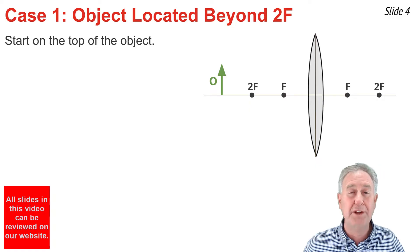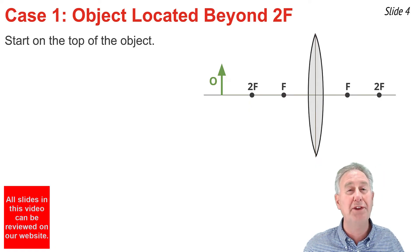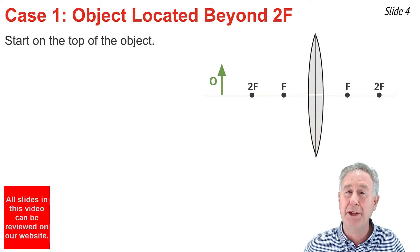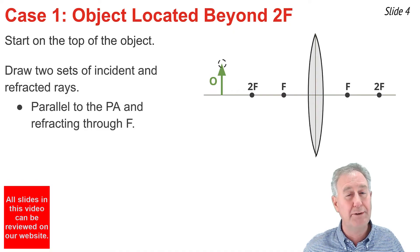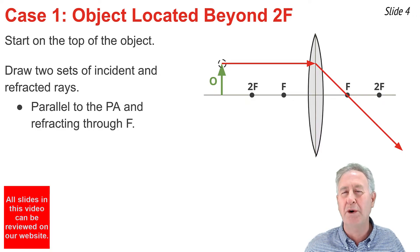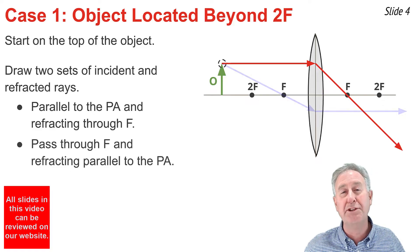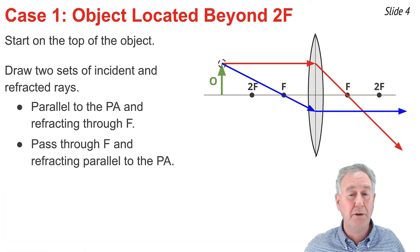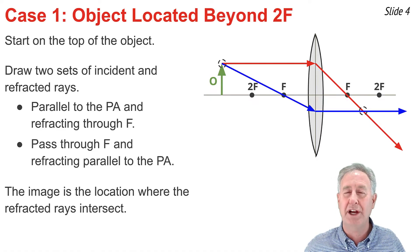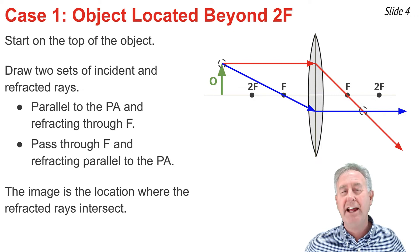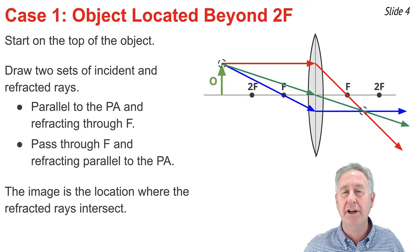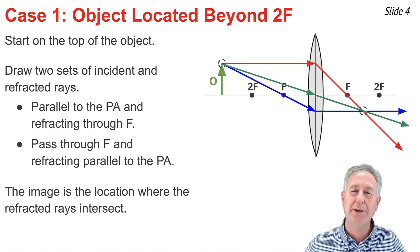This is the first of four examples. In this case, the object is positioned beyond the so-called 2F point. To draw a ray diagram, I begin by picking a point on the extremity of the object — in this case, the top of the object — and from that point I draw two sets of incident and refracted rays. The first is the light ray that travels parallel to the principal axis, and it refracts and passes through the focal point. My second ray is the one that passes through the focal point on the way to the lens, and it refracts and travels parallel to the principal axis. These two light rays refract and intersect on the side of the lens opposite the object.